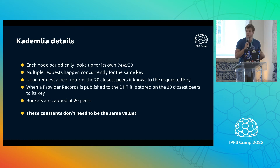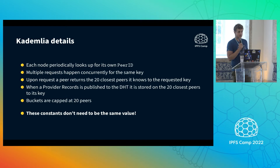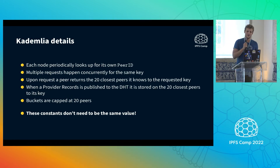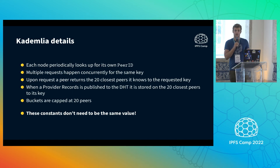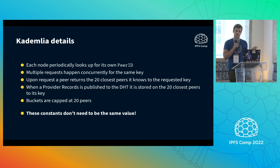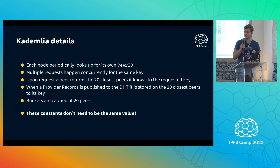Once a node has joined the network, it will periodically look up for itself in order to keep its knowledge current. A node has to know all of the peer IDs in its close neighborhood — the nodes shown in orange. When performing a request for content or for peers, it uses the same key space, and the request is iterative and resolved similarly.